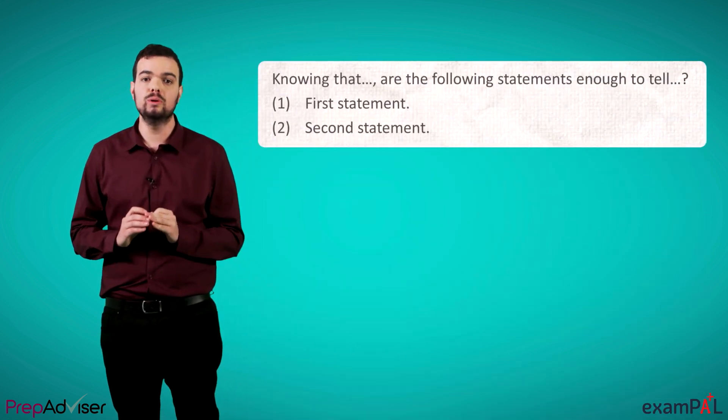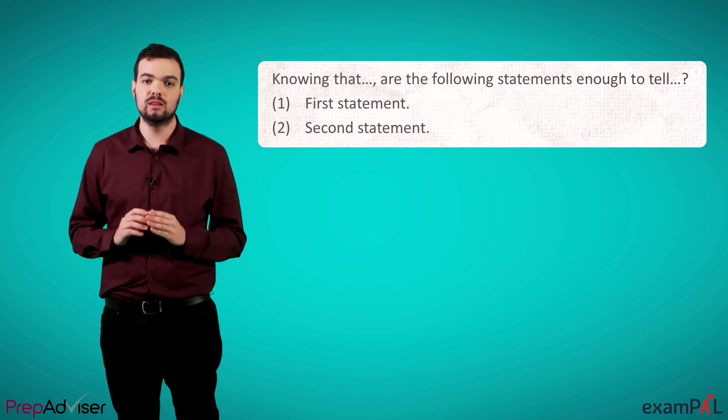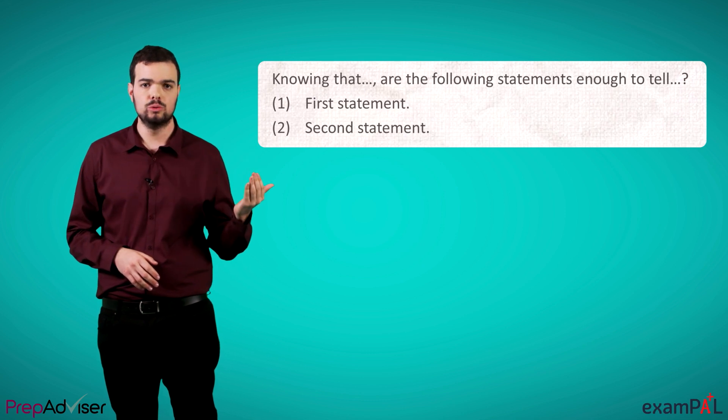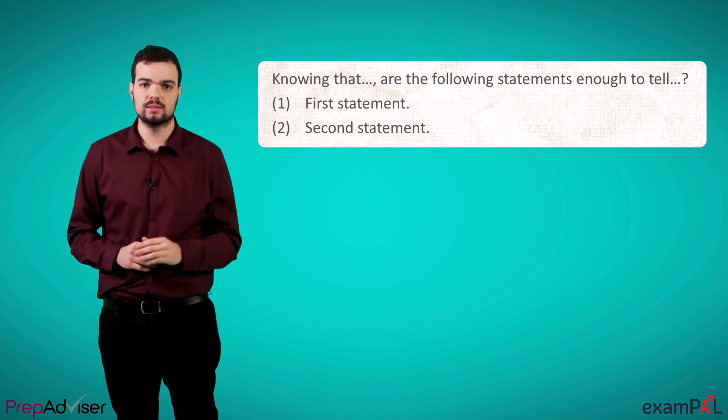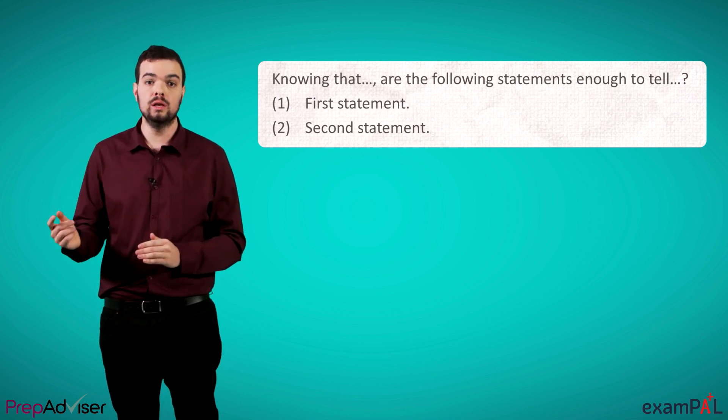Data sufficiency questions always follow the same format. We're given an opening statement in the form of, knowing that something is true, are the following statements enough to tell something else. And then we are given two separate statements, one and two.